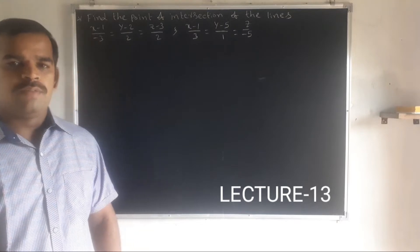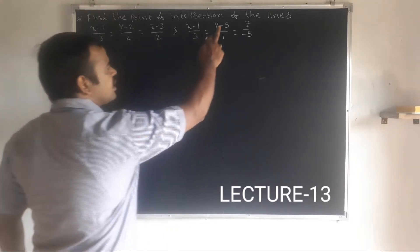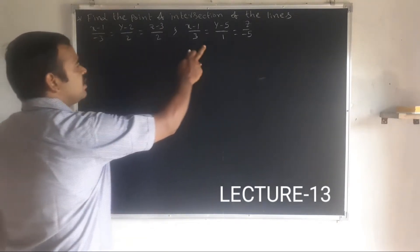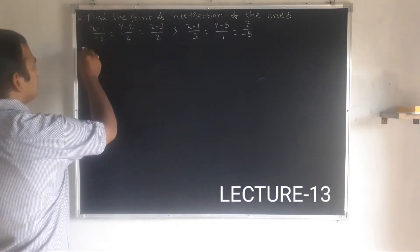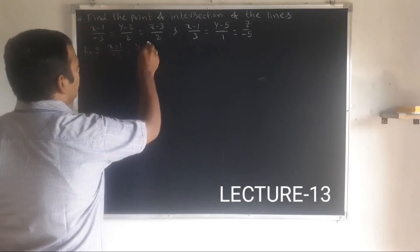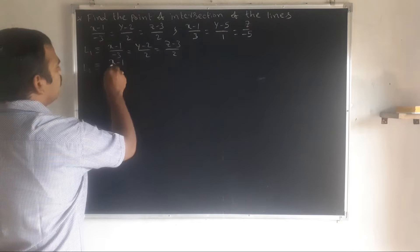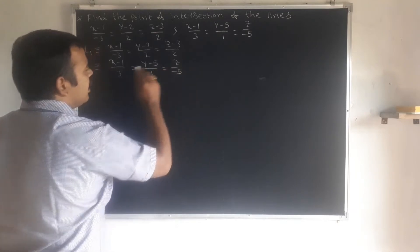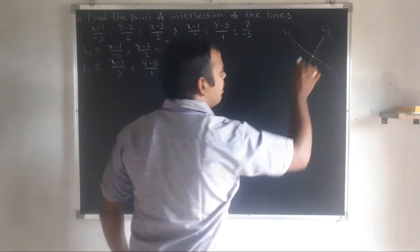Good morning students. Another problem on intersection of line equations. Find the point of intersection of two lines — when two lines have an intersection point, we are given the two line equations. Solution: given lines L1 and L2. L1 is equal to (x minus 1) over minus 3 equal to (y minus 2) over 2 equal to (z minus 3) over 2, and L2 is equal to (x minus 1) over 3 equal to (y minus 5) over 1 equal to z over minus 5.